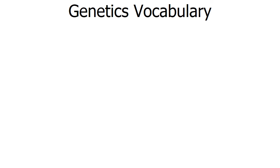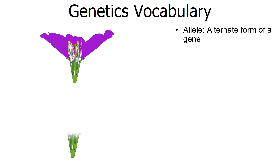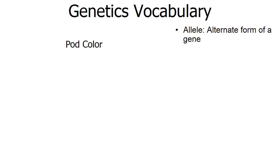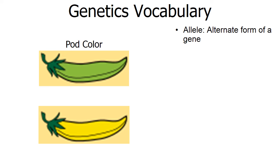As we go through our genetics unit, we need to understand some vocabulary. One of the most important words is allele — an alternate form of a gene. For instance, in flower color, the gene comes in two forms: form one can be purple and form two can be white. The gene for pod color also comes in two forms: one form green, one form yellow. There's an allele for green and an allele for yellow.